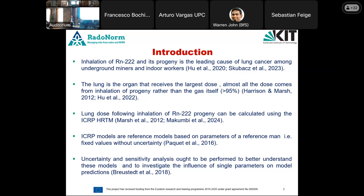The lung receives the greatest dose upon inhalation of radon progeny. More than 95% of this dose is attributed to the progeny rather than radon itself, because radon gas is mostly exhaled. The progeny, upon entering the respiratory tract, attach themselves to the respiratory airways and deliver most of the dose to the lung due to their short half-lives, decaying before being cleared by particle transport to blood or the alimentary tract.